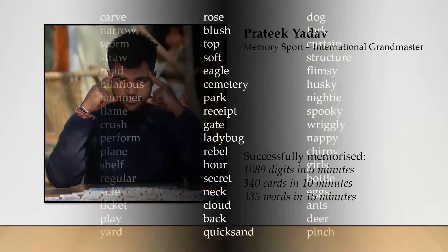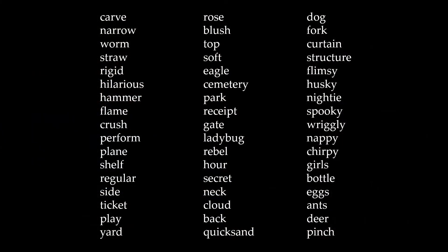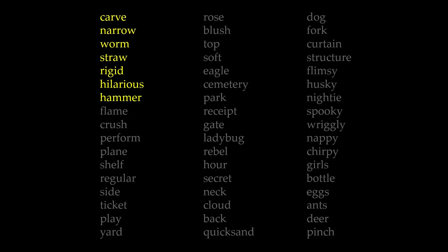Time for some examples. Here are 51 words. Do you reckon it's possible to memorize them all? Well, yes, if you're a Pratik. But for us, let's just focus on the first seven words. How might we try to memorize these? We might notice, for example, that all seven words have an R in them: carve, narrow, worm, straw, rigid, hilarious, and hammer.